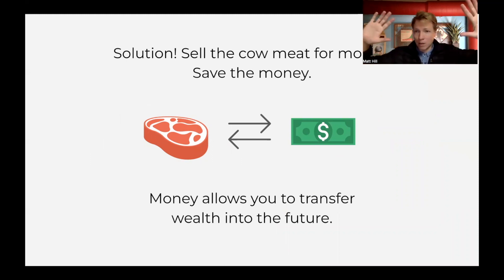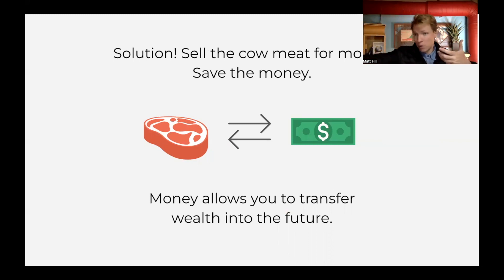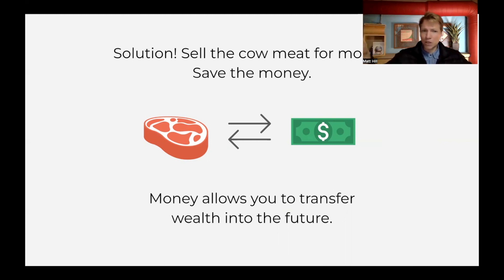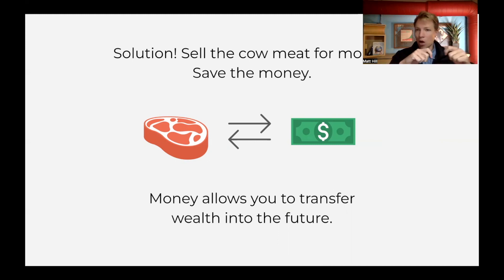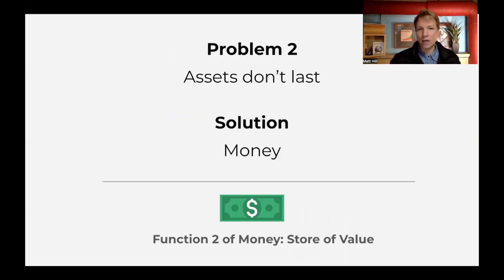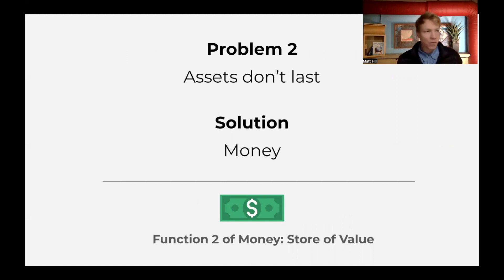Essentially what you're doing is a little bit of a time travel trick — you're taking wealth from the present and transferring it to your future self. That's what you're doing when you're saving money. When you get your paycheck, you don't spend it all that day — that's your wealth in the present, and if you save it, you're transferring it to your future self. When you borrow money, you are borrowing from your future self. With money, we can move assets forward and backward in time. This is its second function: store of value — money lets us move wealth around in time. Very powerful; it's essentially time travel. So our first function is medium of exchange, and the second function is store of value.